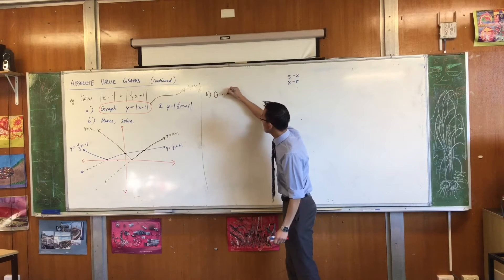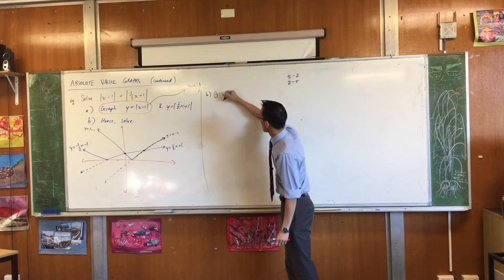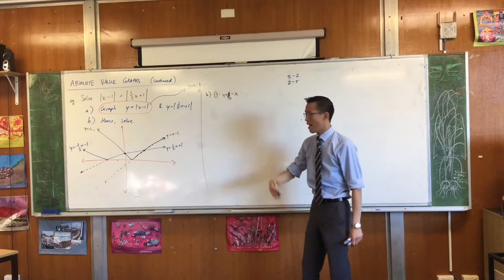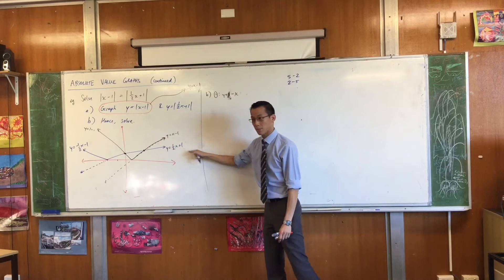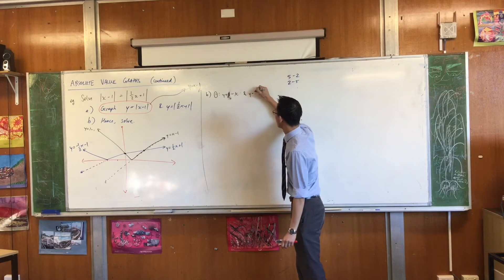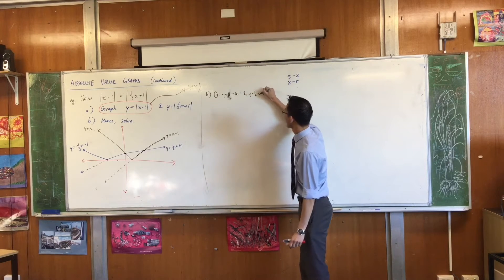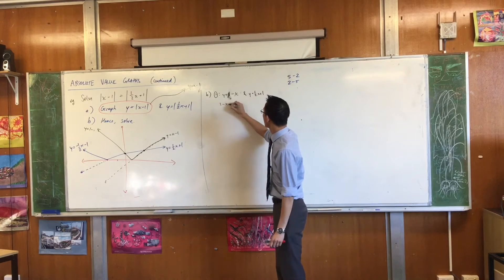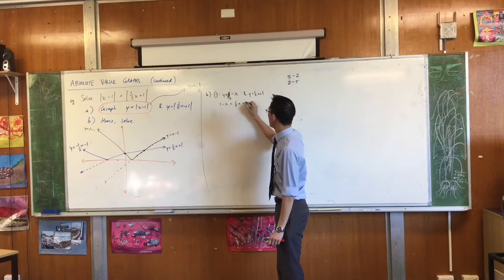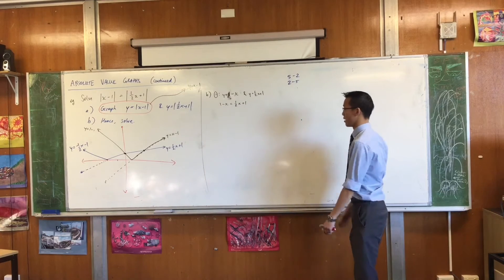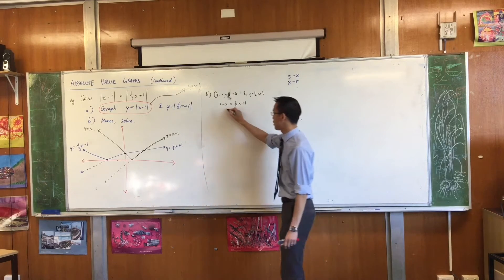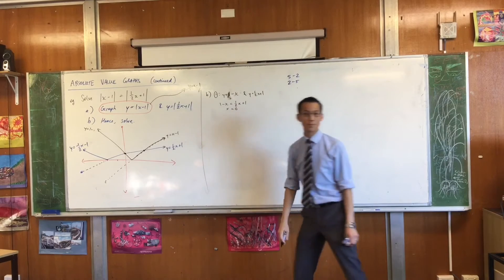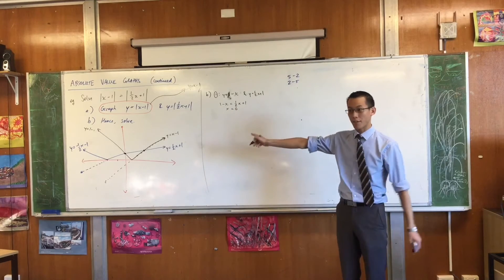firstly, when y equals 1 minus x, it's going to intersect with half x plus 1 once. So I'm just going to solve for these together. 1 minus x equals half x plus 1. Let's have a look here. I guess I actually already know what this is. It's x equals 0.